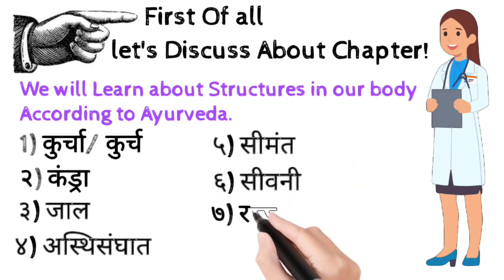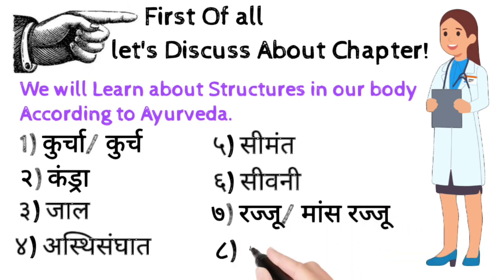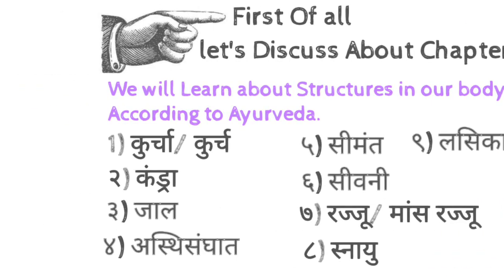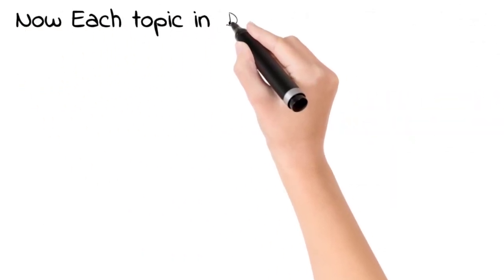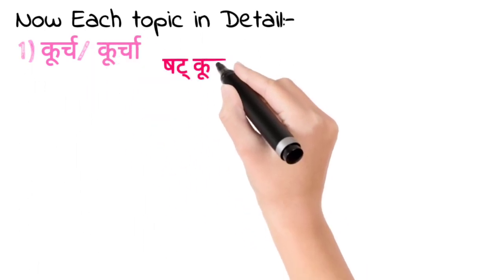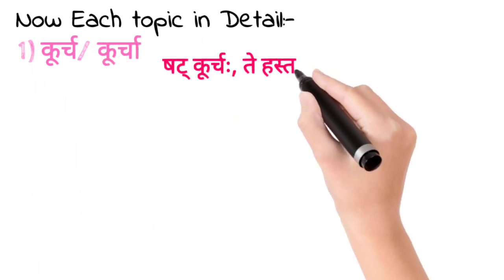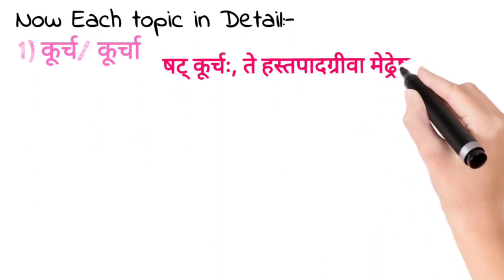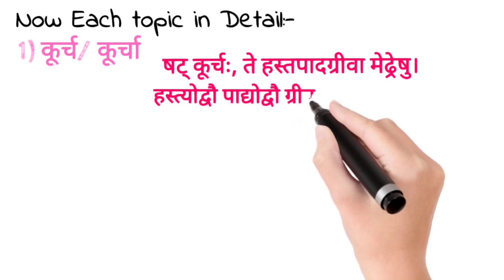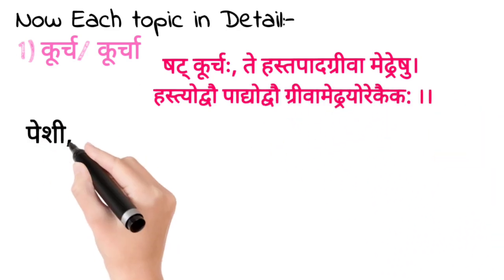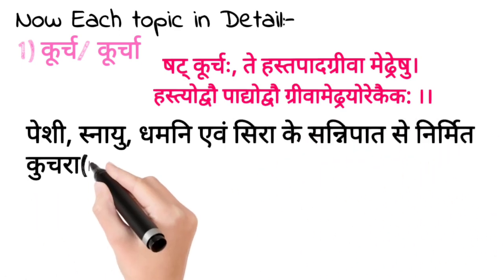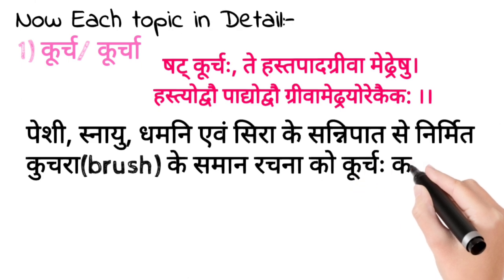The chapter includes topics like Kurcham, Kandara, Jalam, Asthi Sangat, Simaant, Seevani, which is also called Maas Raju. Eighth is Snayu and ninth is Lasika. Now let's go to the topic in detail. First of all students, Shat Kurcha, Te Hast Paad Greeva Medresu. Hasteou Dvav, Paad yo Dvav, Greeva, Medresu Aqa ke hai. Paeshi, Snayu, Dhamni or Sira ke sanni paad se nirmit kuchra ke samaan rachna ko Kurchi kahte hai.